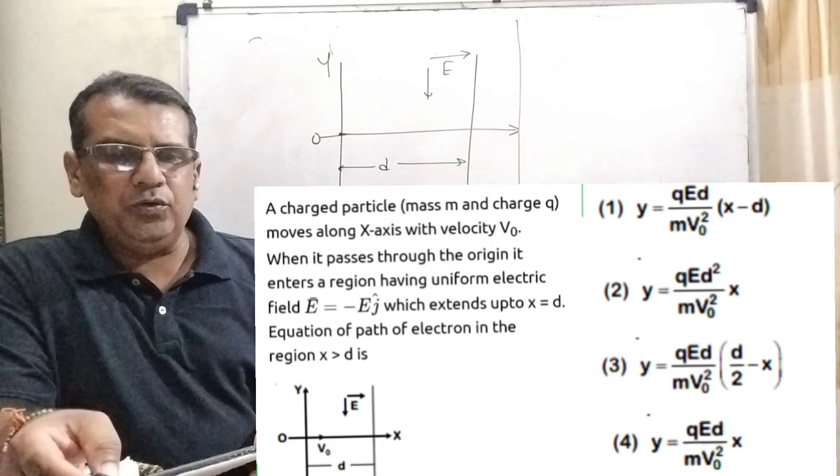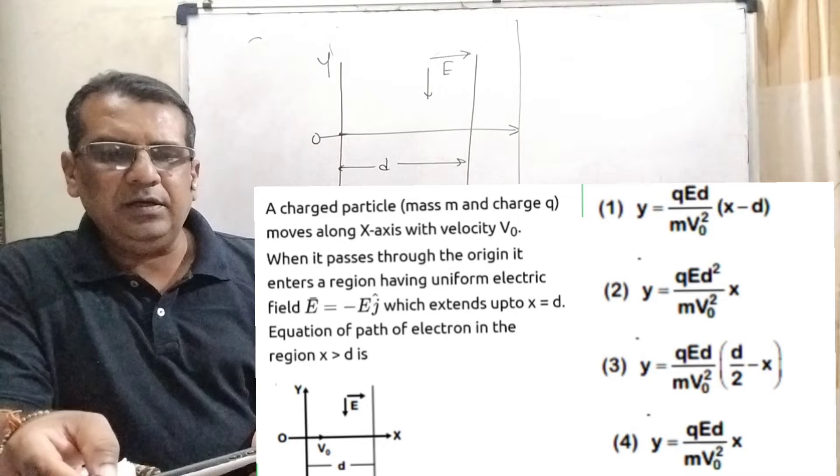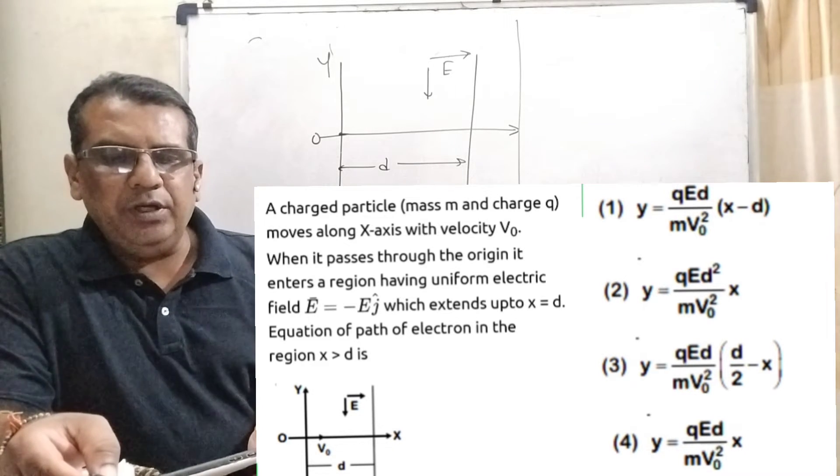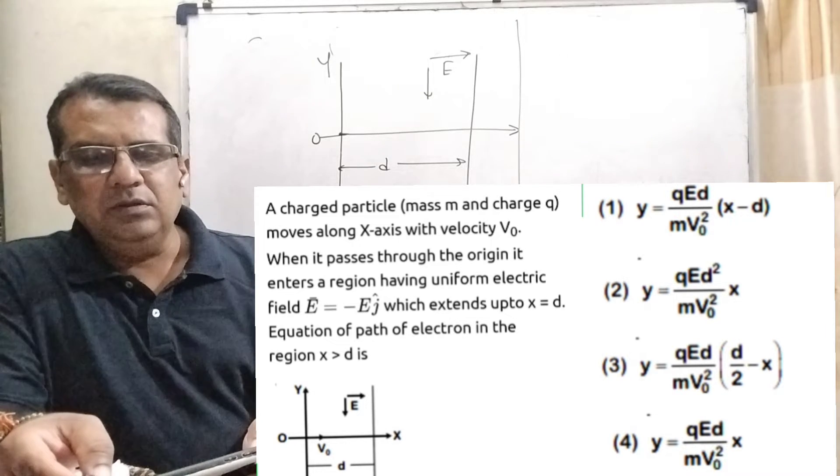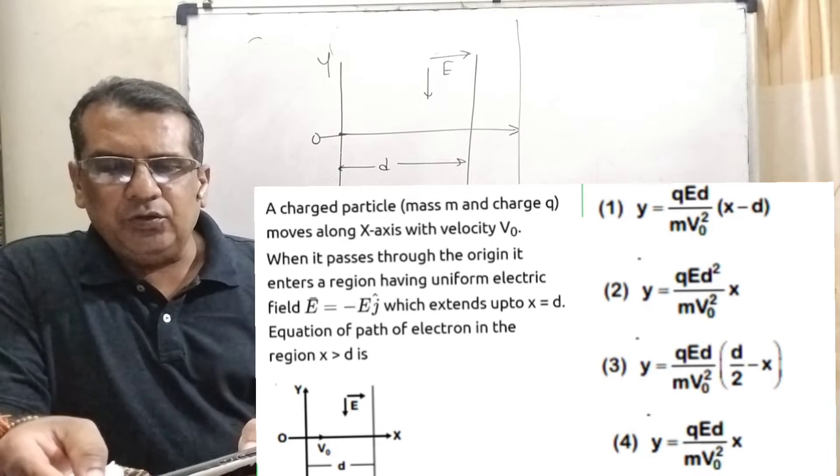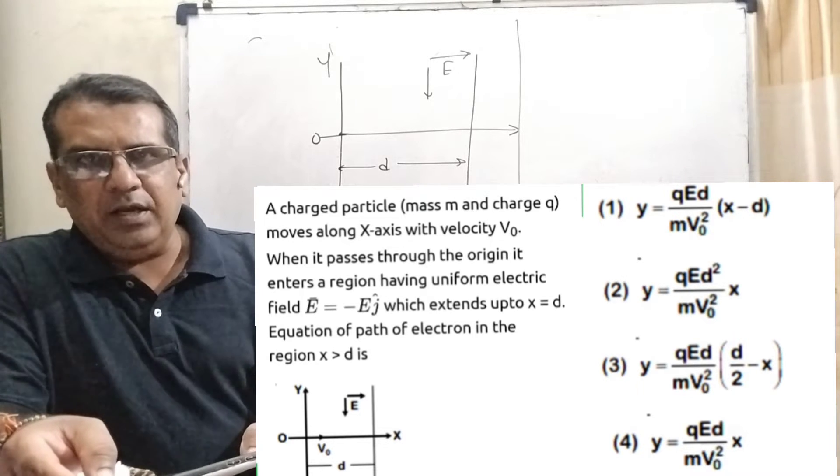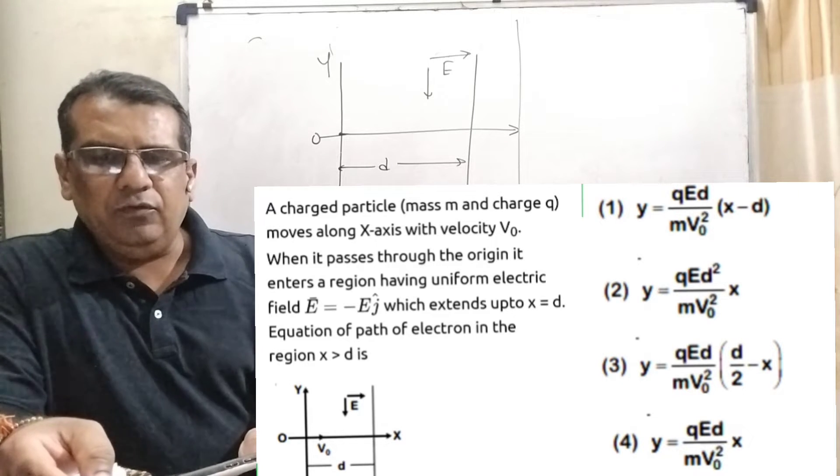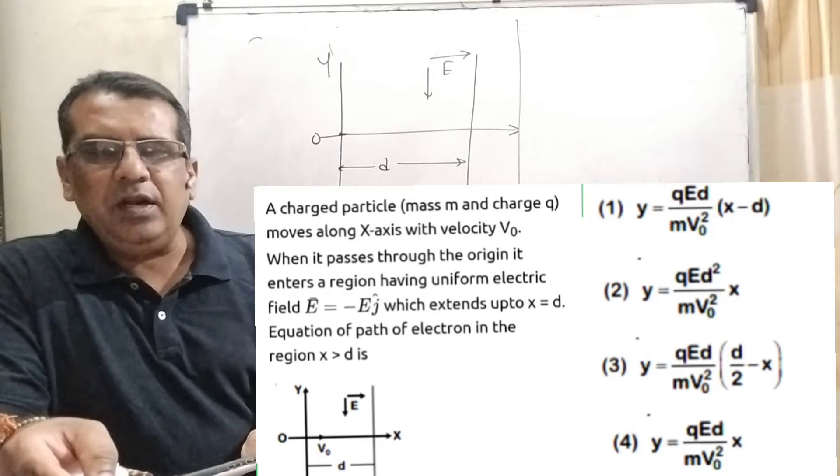Here we have given four options. Option first: y equal to qEd upon mv0 square into bracket x minus d. Option 2: y equal to qEd square upon mv0 square x. And last, fourth option: y equal to qEd upon mv0 square x.